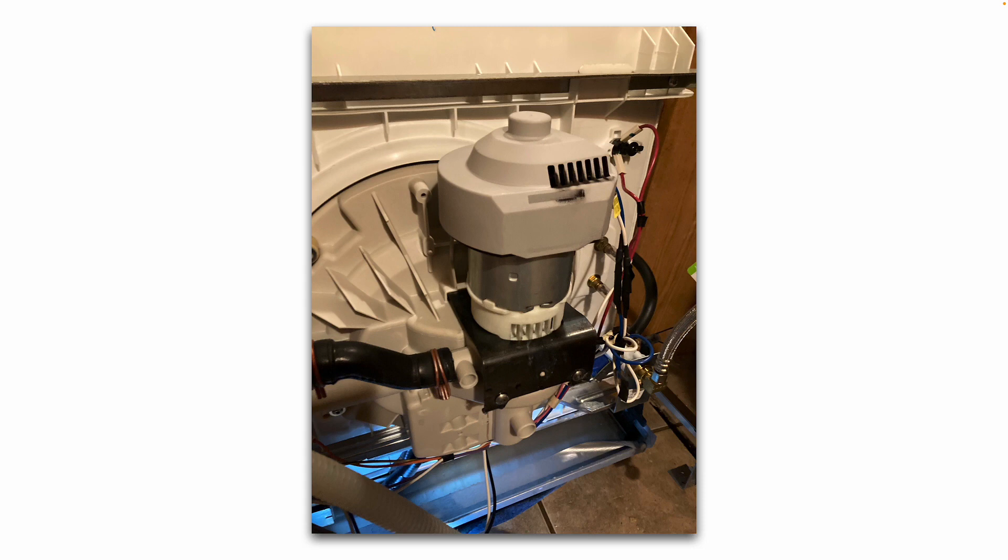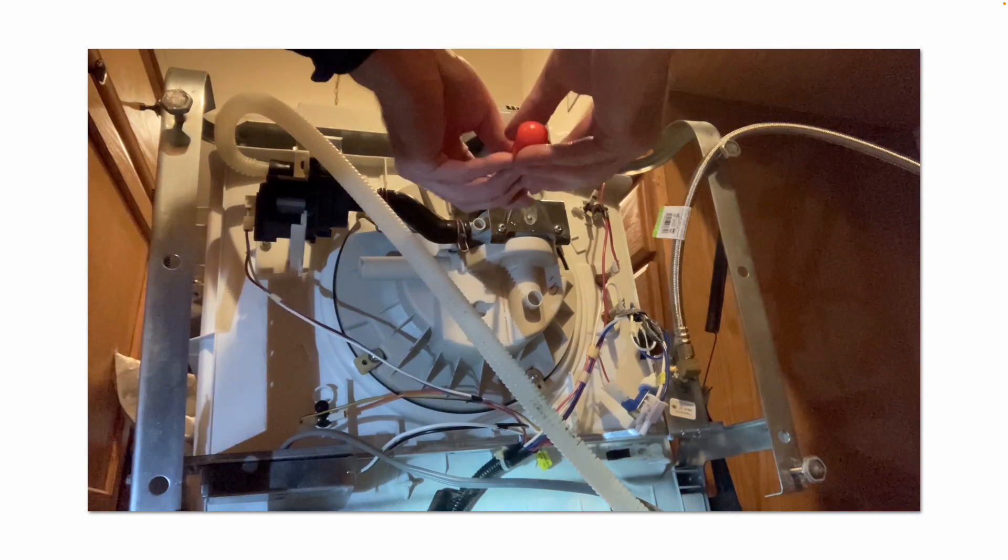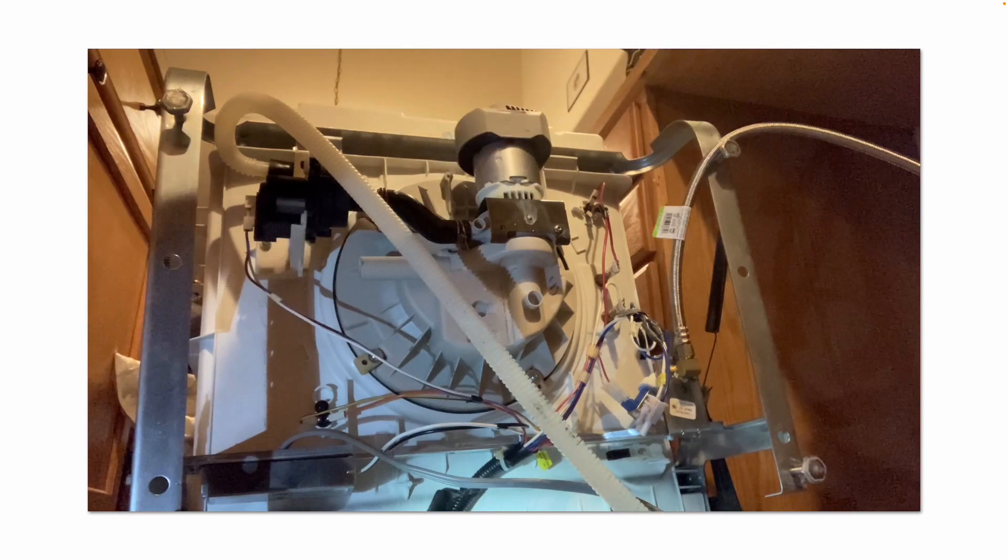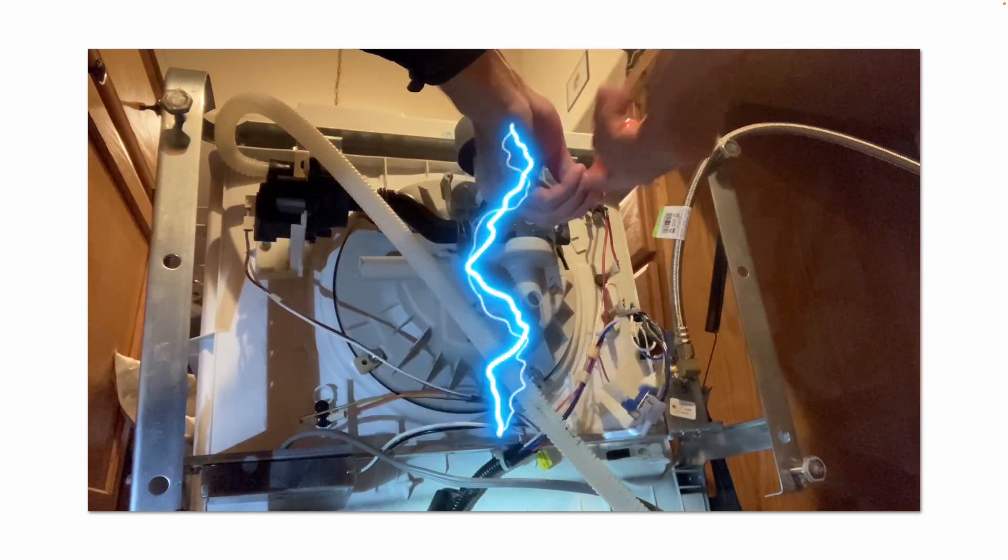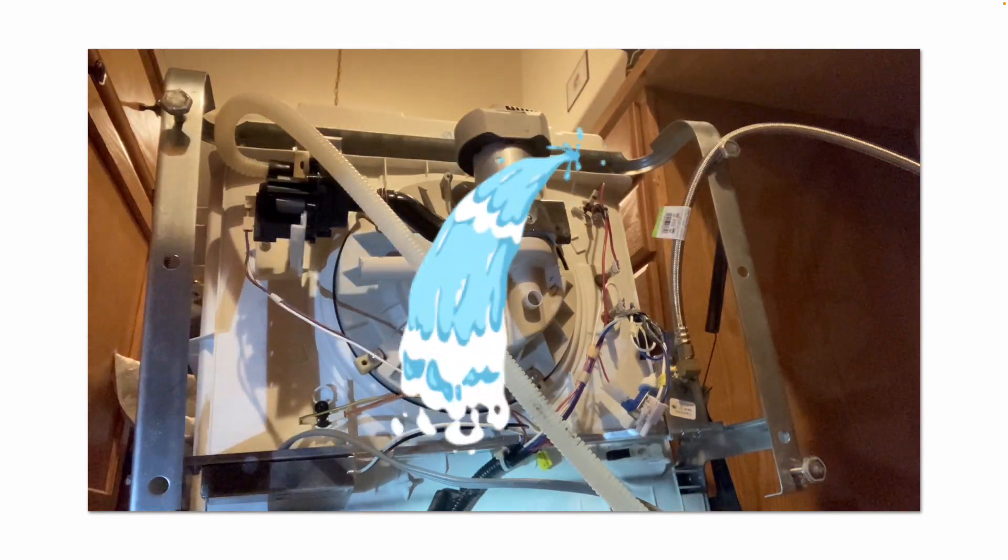I removed the dishwasher from underneath the kitchen countertop out of the opening and gently flipped it on its side. You can see the motor has a lot of carbon buildup. To remove this motor, it's fairly simple. Before you do this, make sure you disconnect the power plug from the outlet—usually that's underneath your sink—and turn off the water supply to your dishwasher.